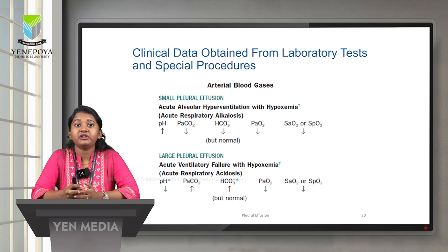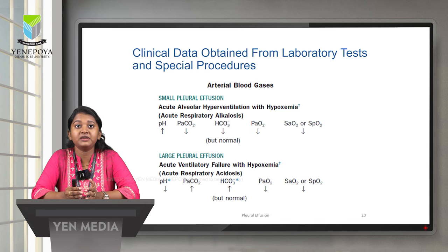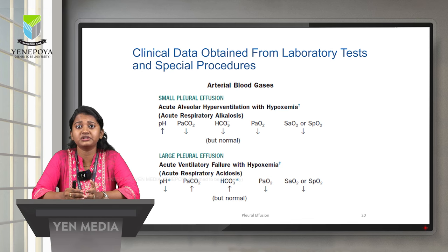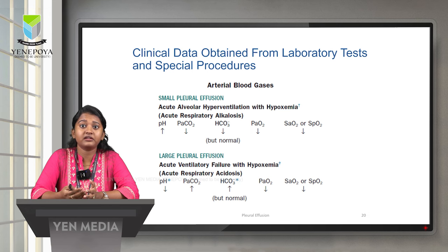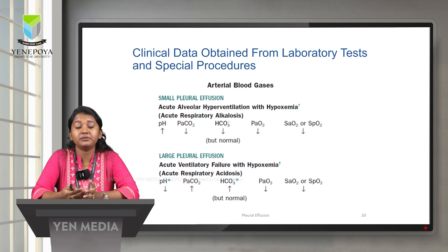On ABG, when a patient has a small or mild pleural effusion, the ABG will show acute respiratory alkalosis. But when the pleural effusion is massive, the patient will have increased PaCO2 and will be hypoxemic, and the ABG will show acute ventilatory failure with hypoxemia — that is, acute respiratory acidosis.